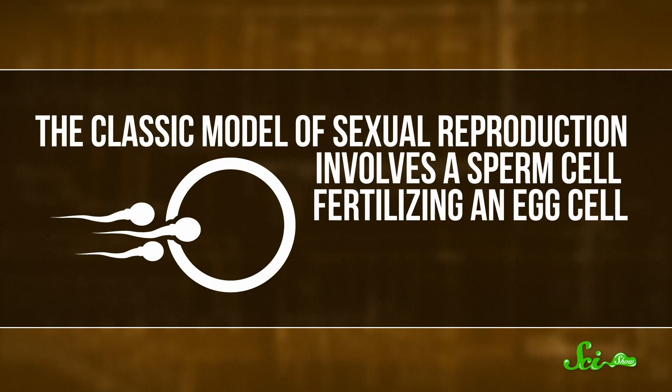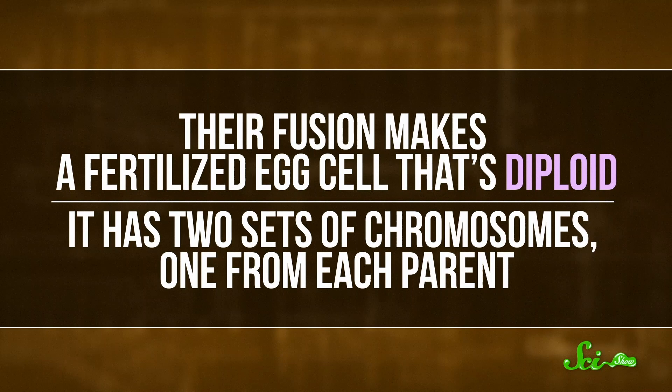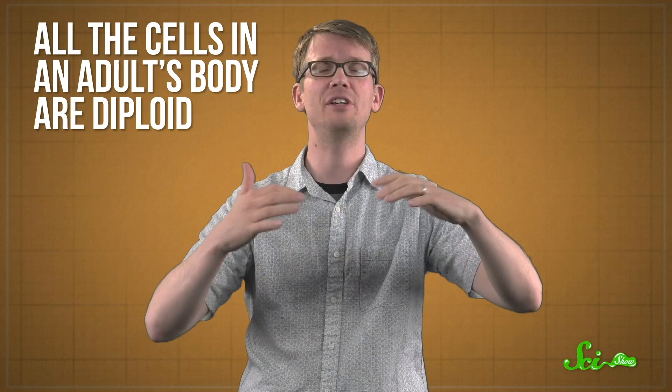The classic model of sexual reproduction involves a sperm cell fertilizing an egg cell. Both of these cells are haploid, meaning they only have one set of genetic material in packages called chromosomes. Their fusion makes a fertilized egg cell that's diploid—has two sets of chromosomes, one from each parent. That fertilized egg will become a bundle of cells, which will keep dividing and begin differentiating into various body parts. Basically, all the cells in an adult's body are diploid. In early development, these cells that have barely differentiated and can become pretty much anything are called embryonic stem cells.